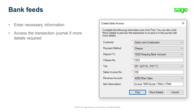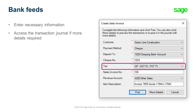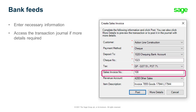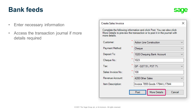Let's take this example of recording a sales transaction. This will bring us to the new updated window where we can enter our sales invoice details such as the customer name, payment method, bank account, check number where required, tax, sales invoice number, revenue account, and the item description. The transaction can then be posted, or more details can be added by opening the sales channel when clicking on more details.